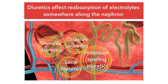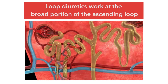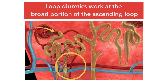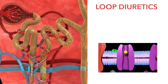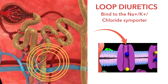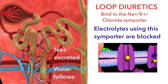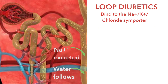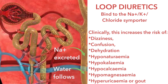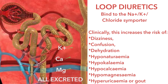The loop diuretics, furosemide and bumetanide, act on the broad part of the ascending limb of the loop of Henle. There they inhibit the sodium-potassium-chloride symporter by binding to the chloride site of the co-transporter. The end result is they decrease the amount of sodium in the blood by excreting more sodium, water follows so we're excreting water as well, potassium is kept in the tubule instead of being reabsorbed, and calcium and magnesium are decreased as well.